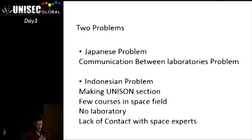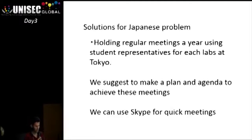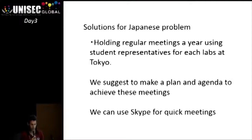For the Japanese problem: there are few courses in the space field, there is no laboratory in space, and there is a lack of contact with space experts. The solution for Japanese problems is holding regular meetings per year, using a student representative for each lab at Tokyo. We suggest making a plan and agenda to achieve these meetings, and we can use Skype for quick presentations.